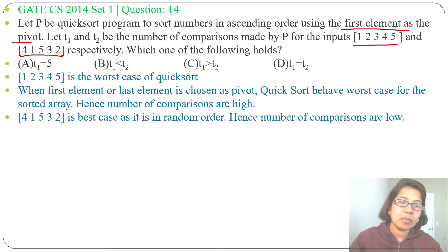So we found that t1 has more comparisons than t2. t1 is the number of comparisons for this list [1 2 3 4 5] and t2 is the number of comparisons for [4 1 5 3 2].